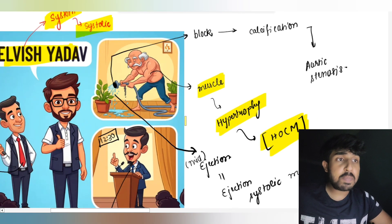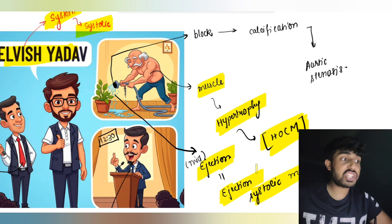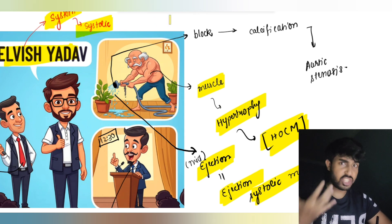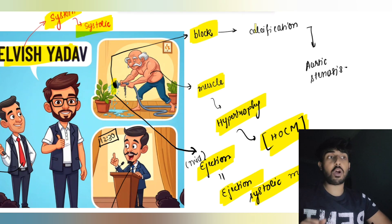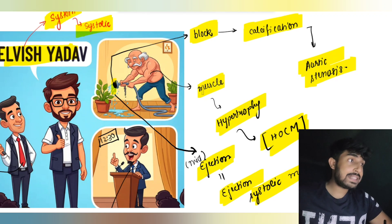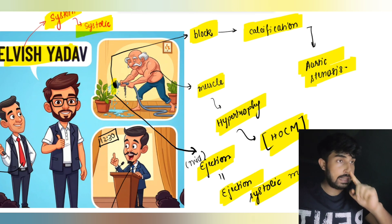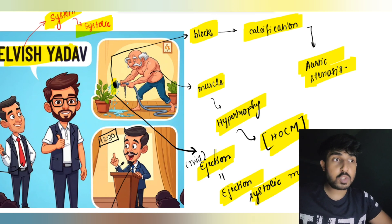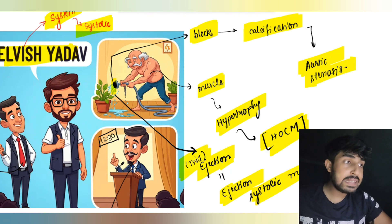Just see this hose pipe is ejecting water — these are ejection systolic murmurs, also called ejection murmurs. This pipe is blocked at the end; that block represents calcification seen in aortic stenosis, which is usually seen in older populations. Hence I have drawn an old man. These are also known as mid-systolic murmurs.